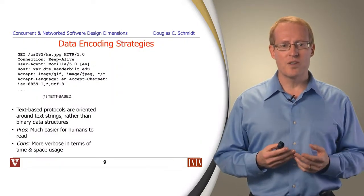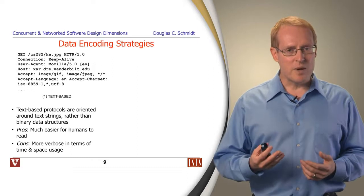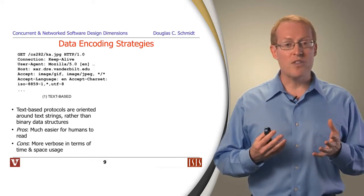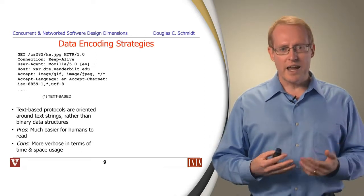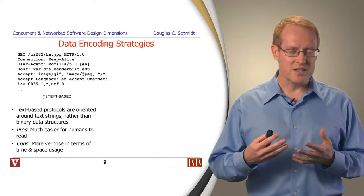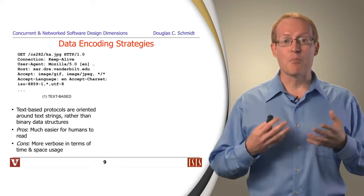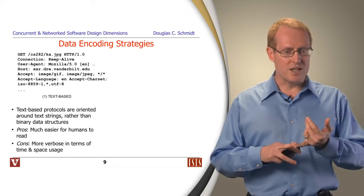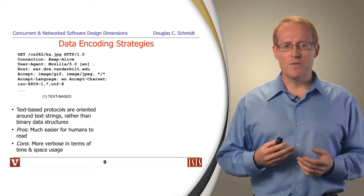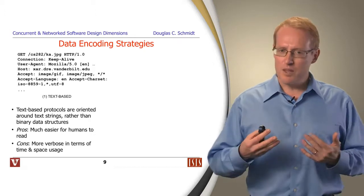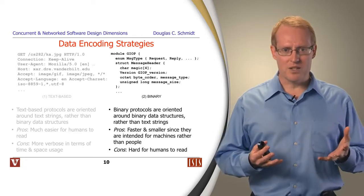Another design decision has to do with data encoding strategies. One way to encode data is to encode it as text strings. Text-based protocols are oriented around these strings rather than around binary data structures. The benefit of using strings is it's much easier for humans to read and arguably easier to write tools that process text-oriented protocols. The downside is that these protocols tend to be a lot more verbose, which means they take more time to process, they take up more space, both in terms of being stored on an end system as well as being transmitted throughout a network. So if you're processor-limited or network bandwidth-limited, there may be some issues here with too much verbosity.